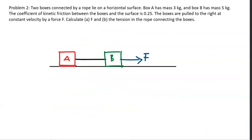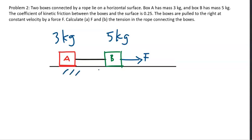Problem 2. Two boxes are connected by a rope on a horizontal surface. Box A has mass 3 kilograms and box B has mass 5 kilograms. The coefficient of kinetic friction between both boxes and the surface is 0.25. The boxes are pulled to the right at constant velocity by force F. Calculate F and the tension in the connecting rope.